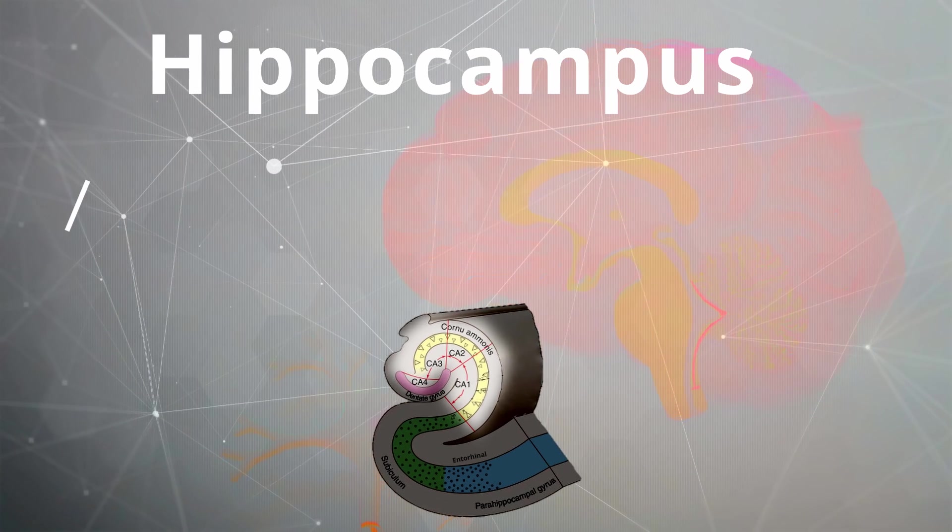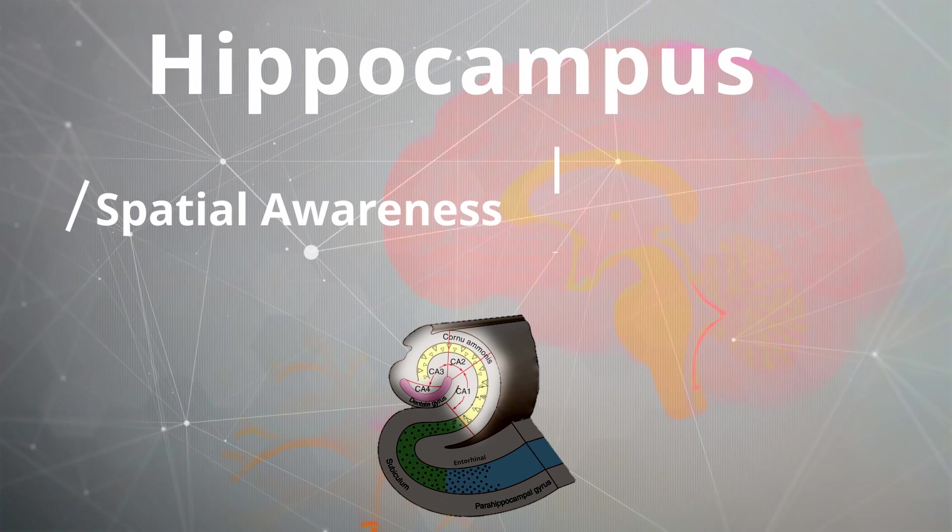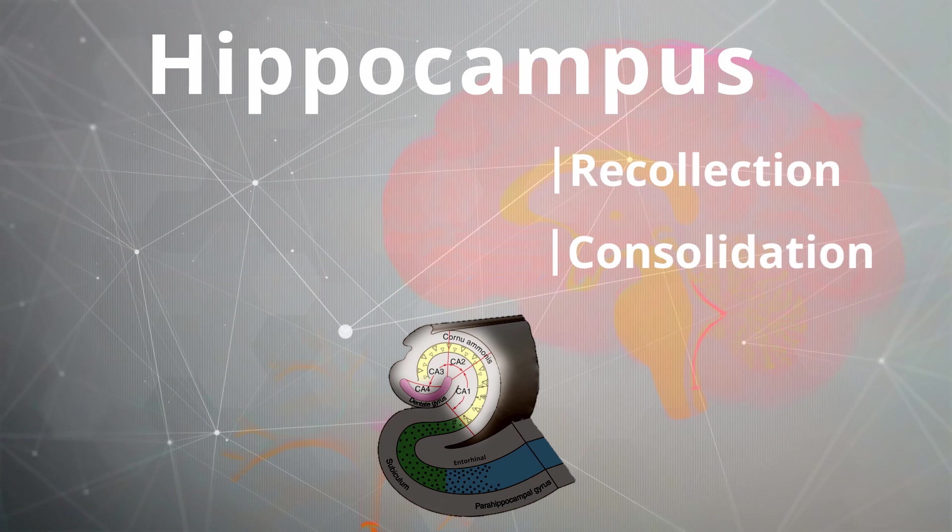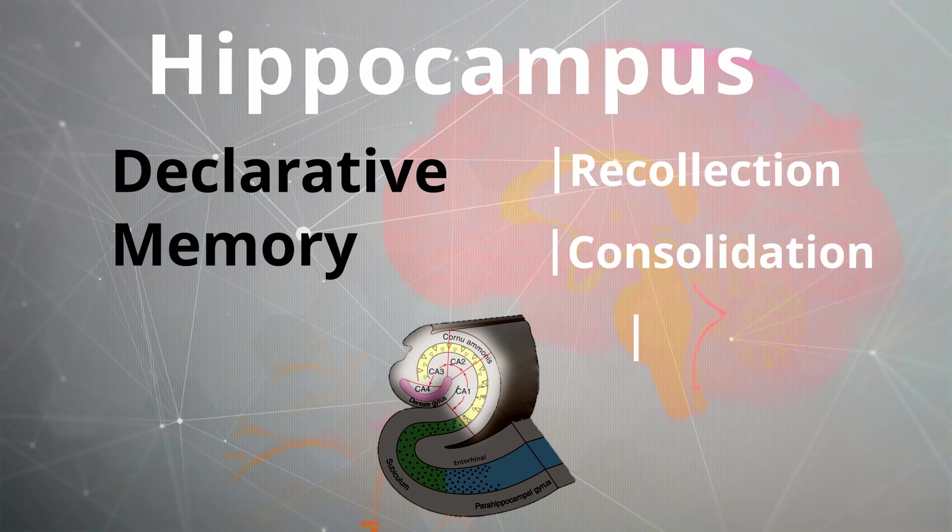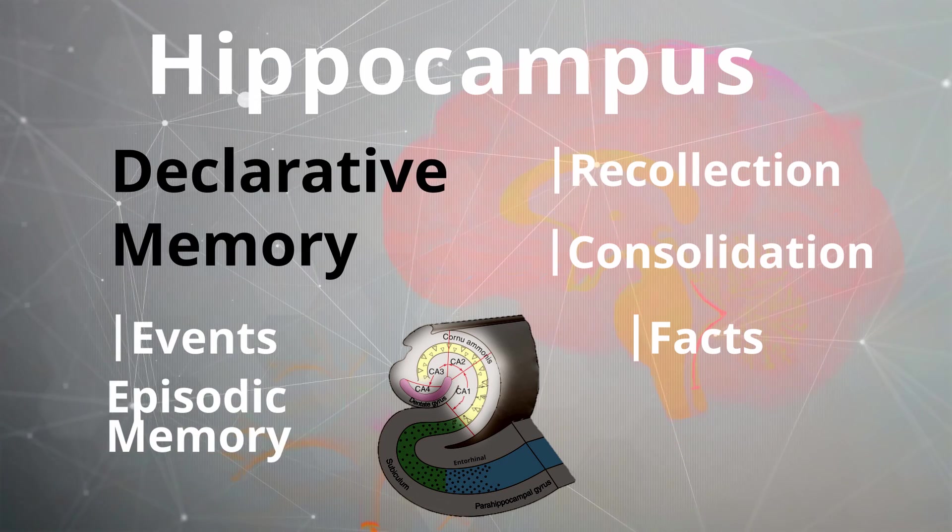The hippocampus has roles within spatial awareness and the conscious recollection and consolidation of declarative memory. These are the types of memories that you can declare, like facts and events, known as episodic memory.